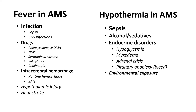Patients with intracerebral hemorrhage, especially pontine and subarachnoid, can have fever as well. Hypothermia, apart from sepsis which is the commonest reason, can be seen in endocrine disorders — for example, hypoglycemia, myxedema, and adrenal crisis. Patients with drug overdose, especially alcohol and sedatives, can have lower body temperature. Environmental exposure can result in both hyperthermia and hypothermia.